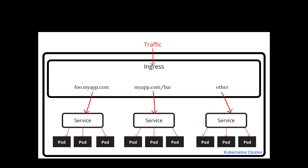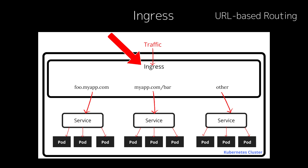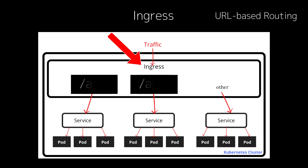That's where Ingress comes into play. Ingress is an API object that manages external access to services in a Kubernetes cluster, typically over HTTP or HTTPS. Ingress provides features like URL-based routing, which means you can define rules to route traffic based on the URL path.